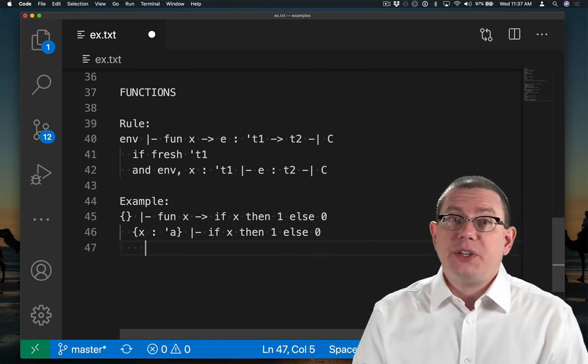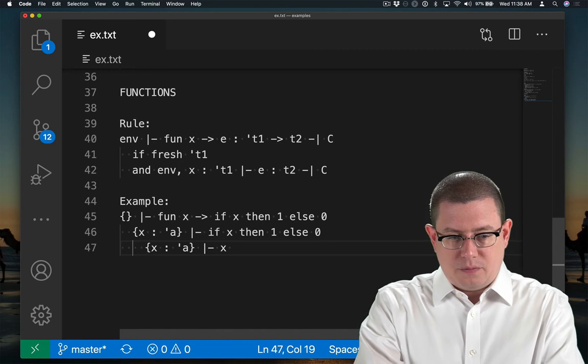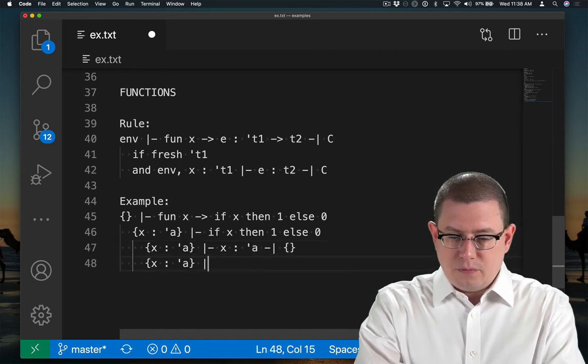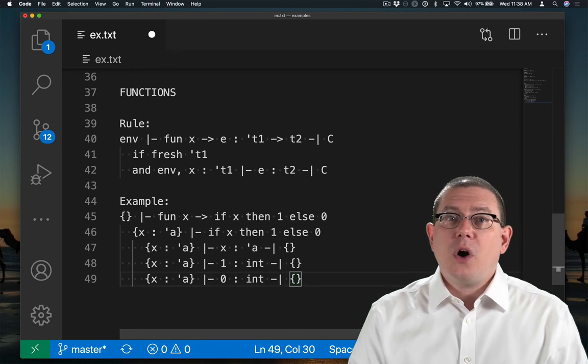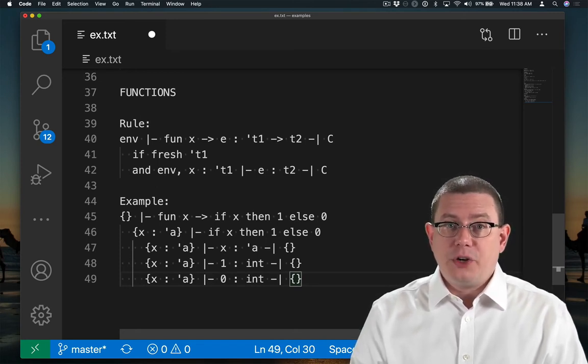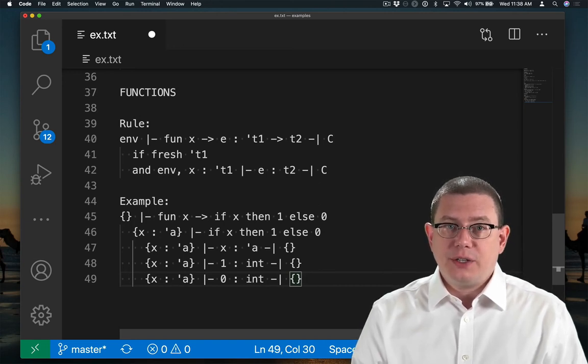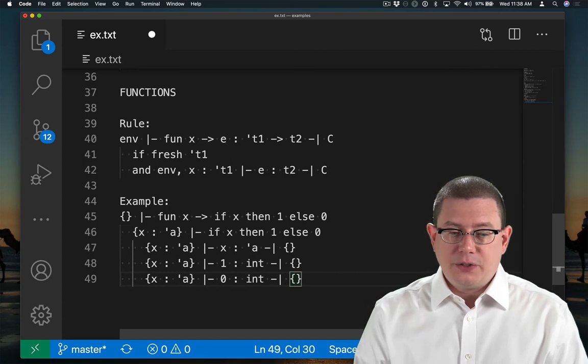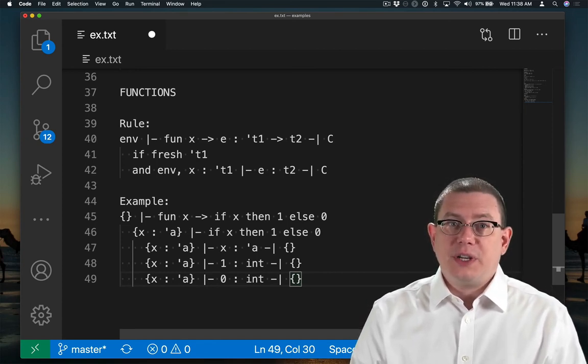Well, we know how to infer the type of an if expression. We just covered that. The type of the guard we've just looked up inside of the environment. That gives us back alpha and generates no constraints. The types of the then and the else branches are just constants. So those both have type int and generate no constraints. And then, of course, we need to generate all of the constraints for the if expression itself.